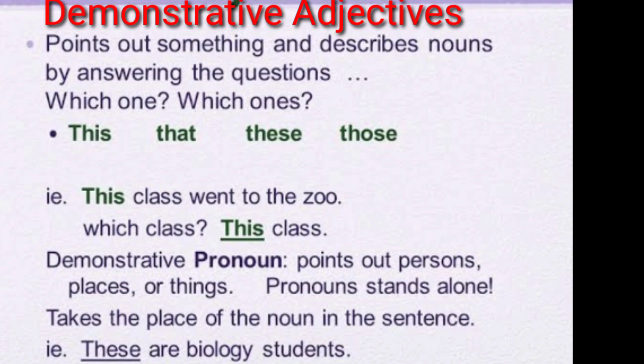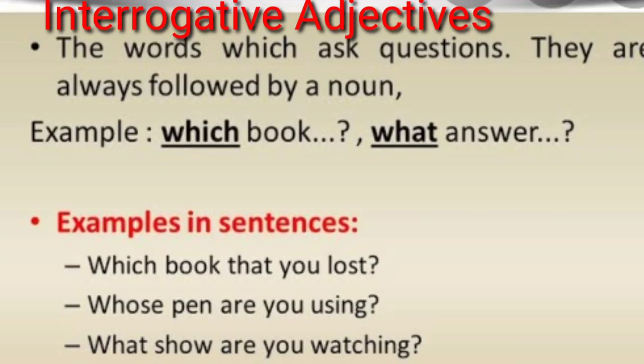'This, that, these, those' are our demonstrative adjectives. For example: 'This class went to the zoo.' Which class went to the zoo? — This. So 'this' is our demonstrative adjective. We use this, that, these, those as demonstrative adjectives when they are demonstrating a place, person, animal, or thing. Demonstrative pronouns, on the other hand, stand alone and take the place of a noun in a sentence.